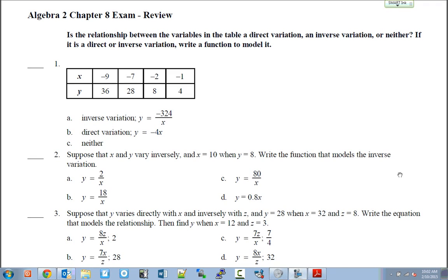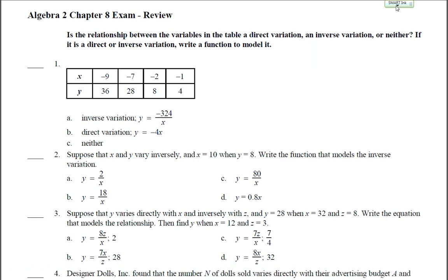In this video we're going over your Algebra 2 Chapter 8 exam review. Number one: is the relation between the variables in the table a direct variation, an inverse variation, or neither? To figure this out, you either multiply x times y to see if it comes out to the same number, or divide y by x to see if it comes out to the same number.